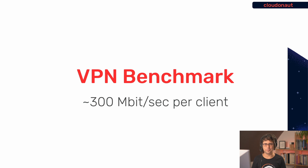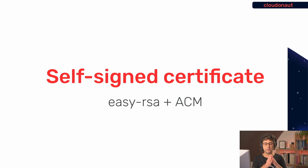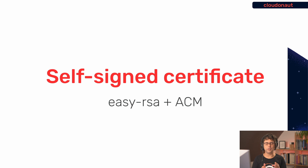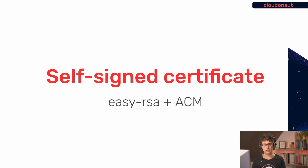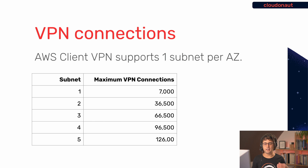Next, about certificates: Client VPN uses TLS to encrypt VPN traffic, so you need a certificate. I started with a public certificate from AWS Certificate Manager, but that caused trouble with the certificate chain. So I switched to using easy-rsa — a GitHub repository linked in the description — to create self-signed certificates optimized for this use case. I then imported those into ACM, and it worked much better out of the box.